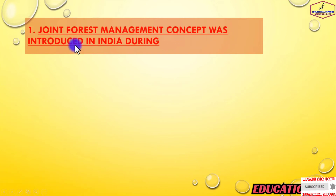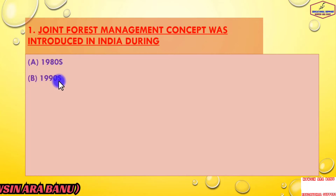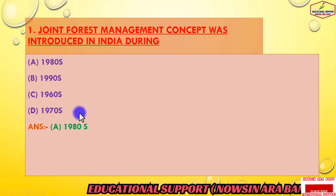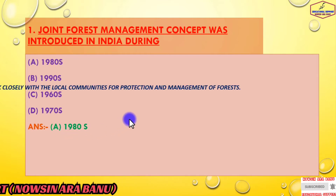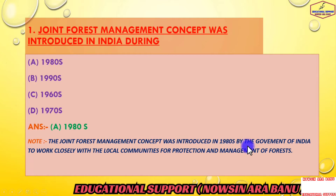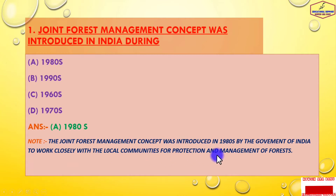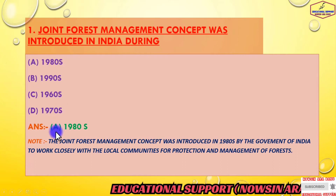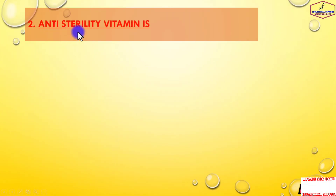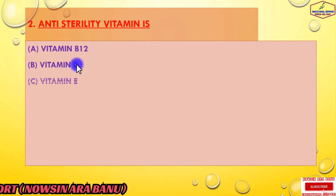The first question is: the Joint Forest Management concept was introduced in India during — options: 1980s, 1990s, 1960s, or 1970s. The answer is option A, 1980s. The Joint Forest Management concept was introduced in the 1980s by the Government of India to work closely with local communities for the protection and management of forests.